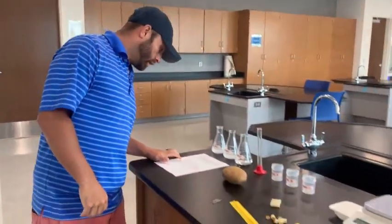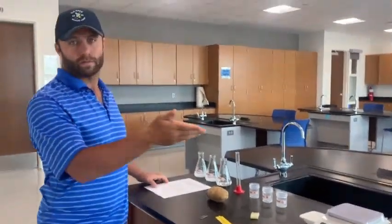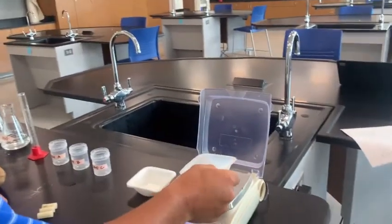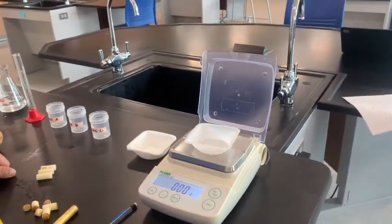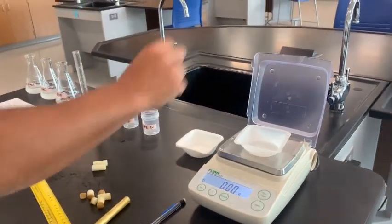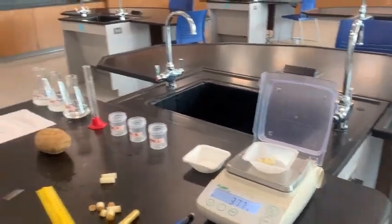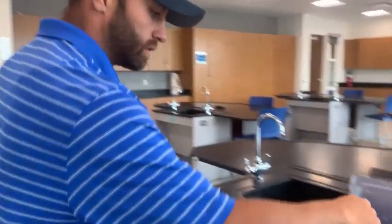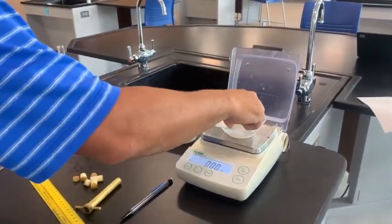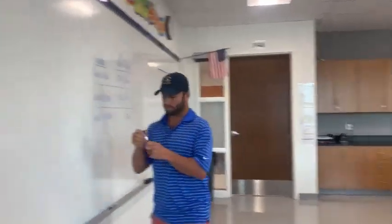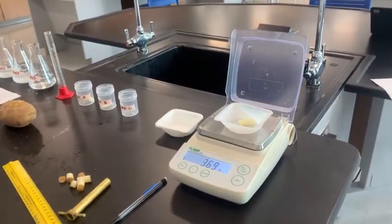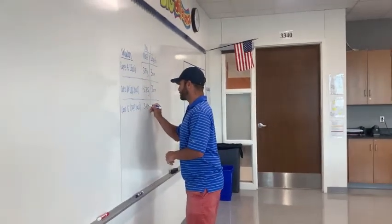Next step: measure and record the mass of each core using the balance. I have my balance right here. I'm going to turn it on, use my weigh boat — I don't want to get my potato core on my nice balance. Put that on and hit zero so it reads zero. Core A weighs 3.77 grams. Notice labeling the units. Core B — 3.75 grams, slightly lighter. Core C — 3.69 grams.